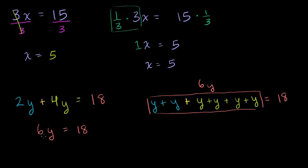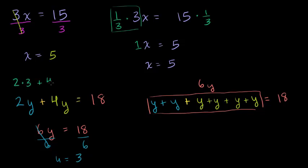Now, hopefully we understand how to do this. If 6 times something equals 18, divide both sides by 6. And we're left with y is equal to 3. You can always check: 2 times 3 plus 4 times 3 — that's 6 plus 12 — is indeed equal to 18. So it works out.